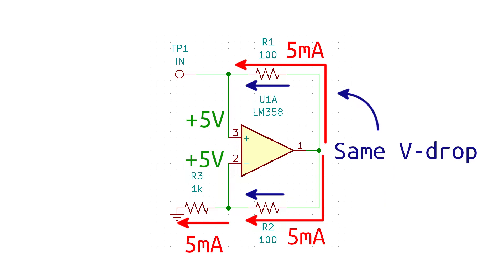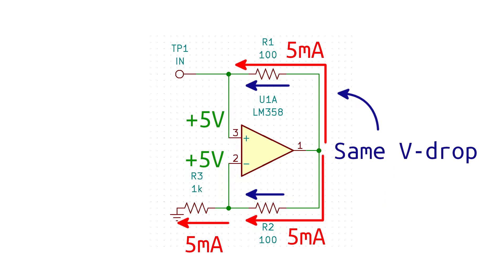And again, to change the resistance, all that we have to do is to replace the bottom resistor. So, I'll swap out the 1k for a 330 ohm resistor just to show you.